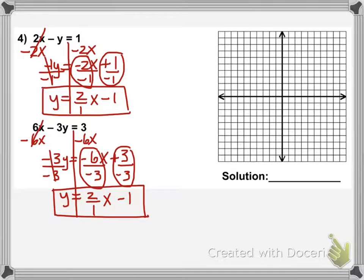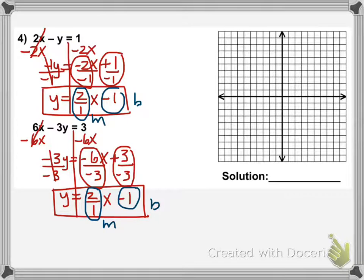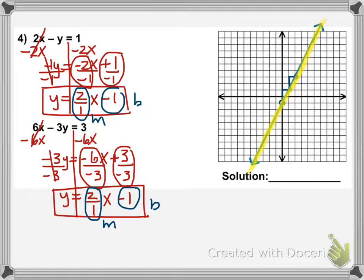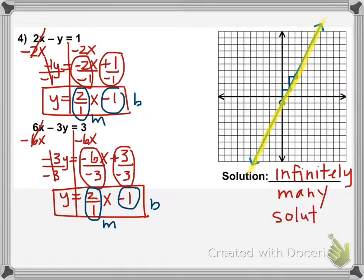You might notice that the B's are the same and the M's are the same. When both are the same — when the lines are exactly the same line — they're going to overlap on each other, and this will be an example of infinitely many solutions. The Y-intercept is negative 1, slope is positive 2 over 1: up 2 over 1, up 2 over 1, draw the line. When we graph the second equation, it's right on top of it. Every single point on both lines is the same, so we have infinitely many solutions.